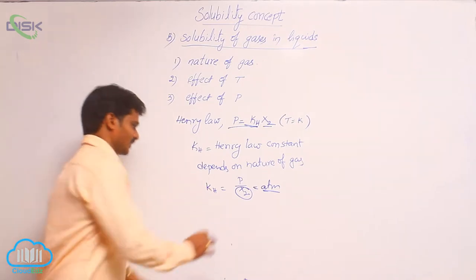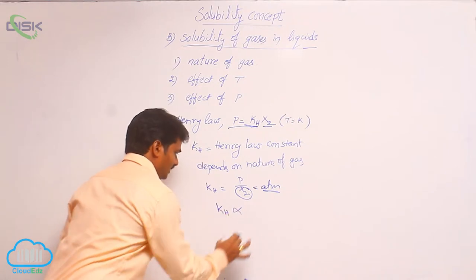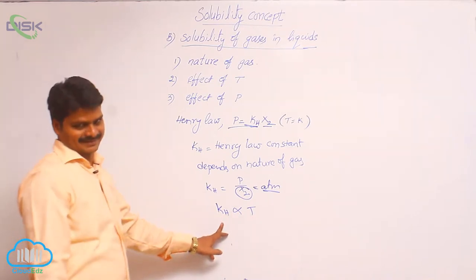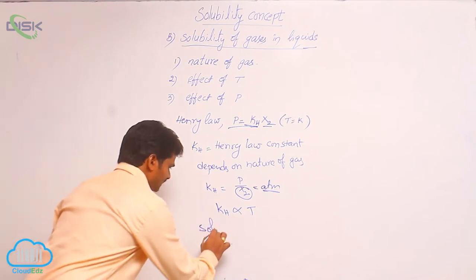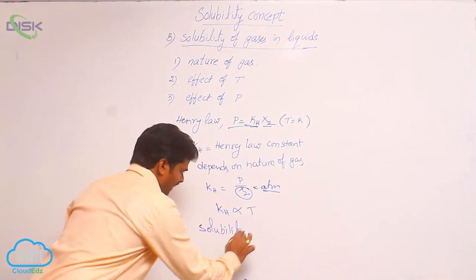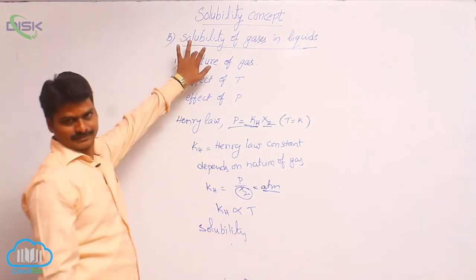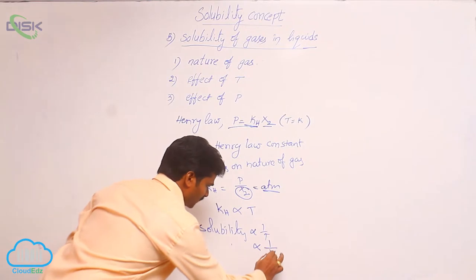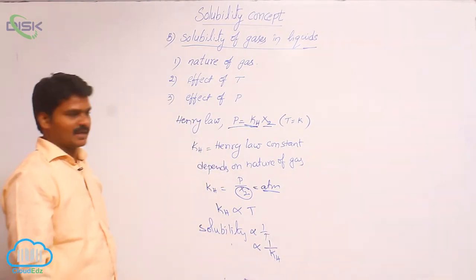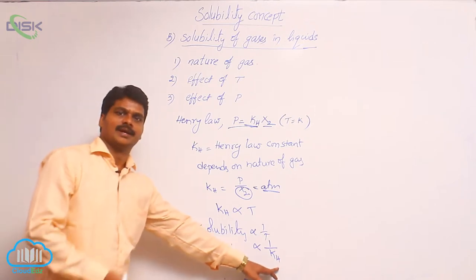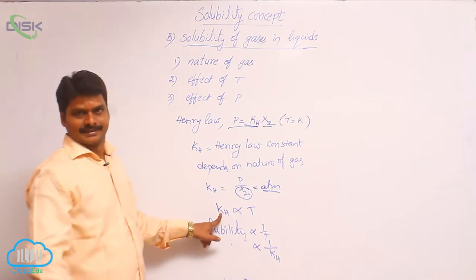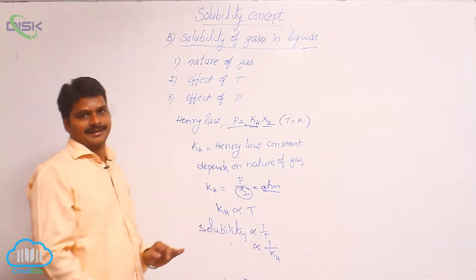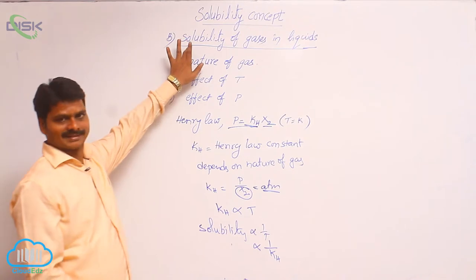How does Kh depend on temperature? Kh and temperature are directly proportional — for any gas, with increase in temperature, its Kh value increases. How are solubility and Kh related? Since solubility is inversely proportional to temperature for these solutions, solubility is inversely proportional to Henry's law constant. So if any gas has a higher Kh, its solubility is less, and if a gas is heated in a solution, its solubility decreases.